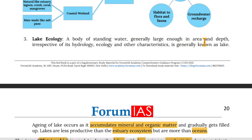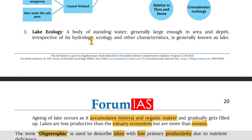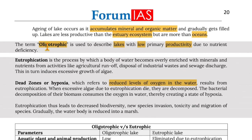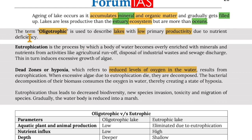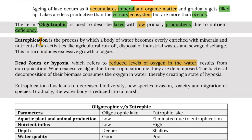Moving on to lake ecology — a body of standing water generally large enough in area and depth is known as a lake. Aging of a lake occurs as it accumulates minerals and organic matter and gradually gets filled up. Lakes are less productive than estuary ecosystems but more productive than oceans. The term oligotrophic describes lakes with low primary productivity due to nutrient deficiency. Eutrophication is the process by which a body of water becomes overly enriched with minerals and nutrients from agricultural runoff, industrial waste disposal and sewage discharge.